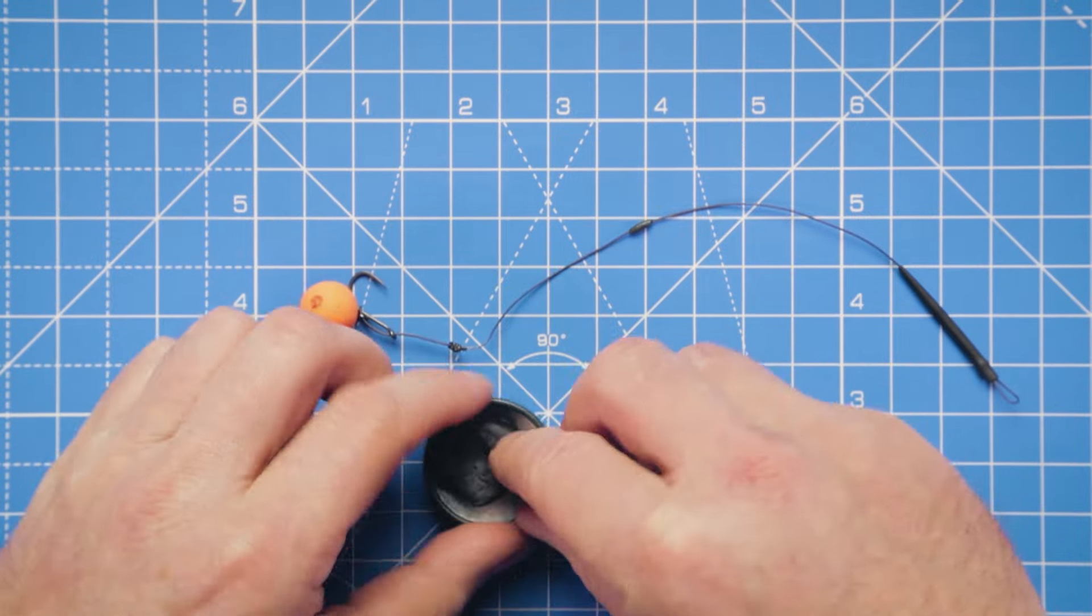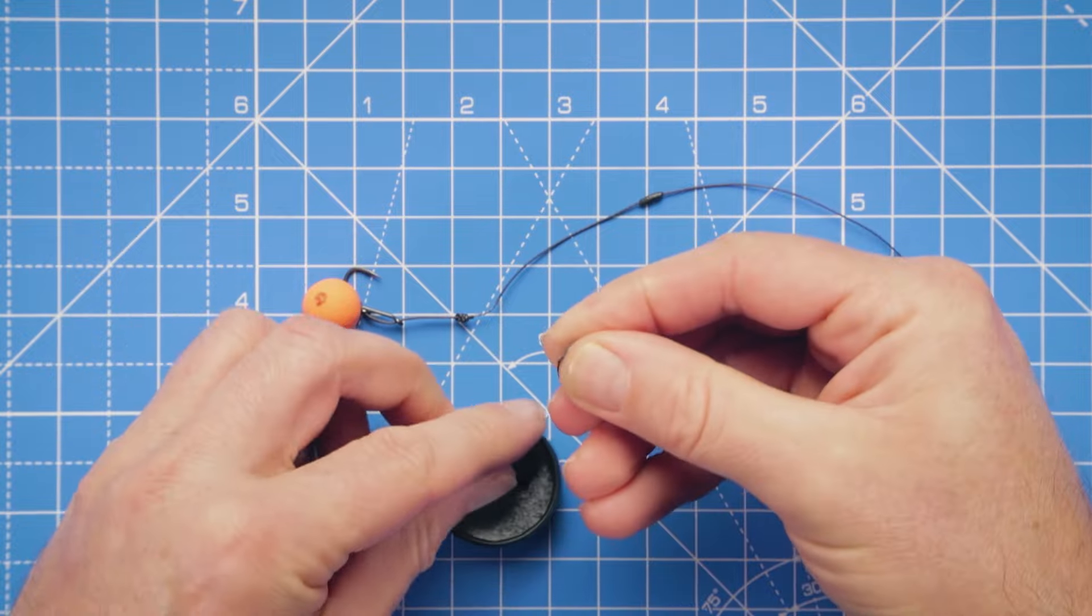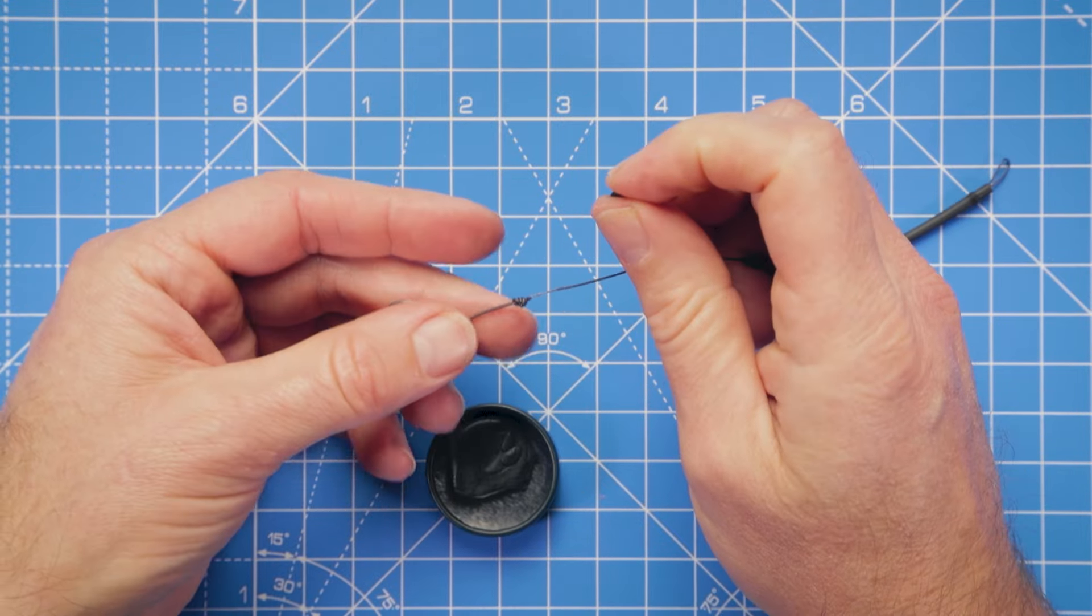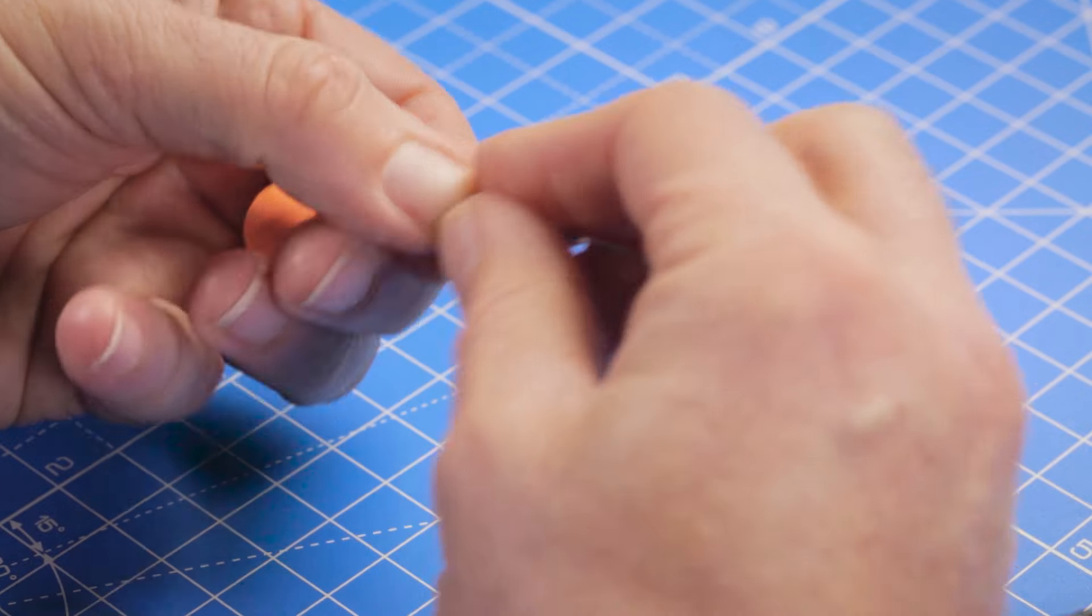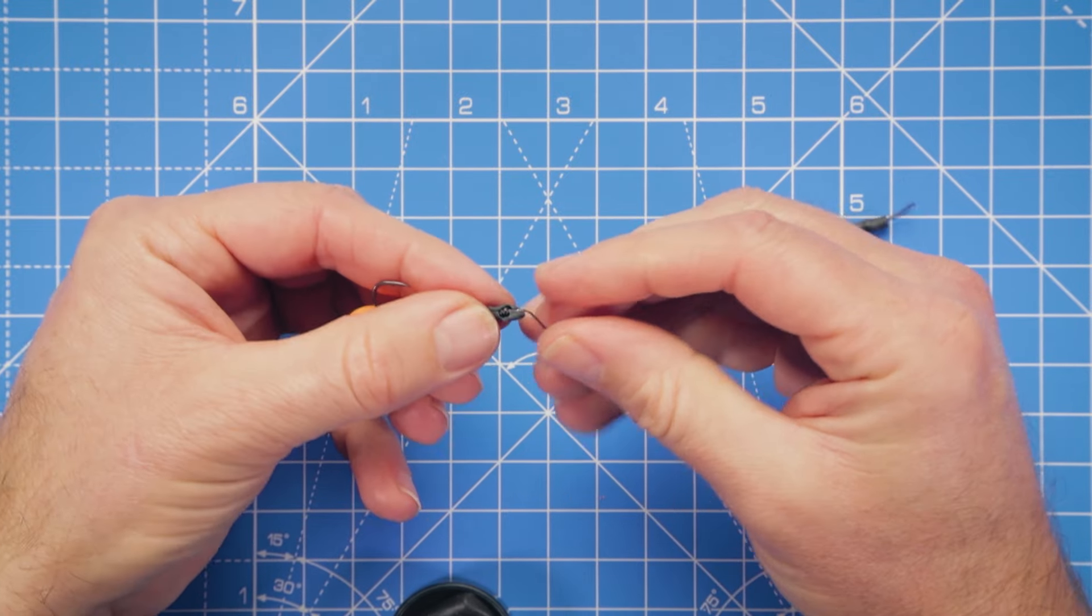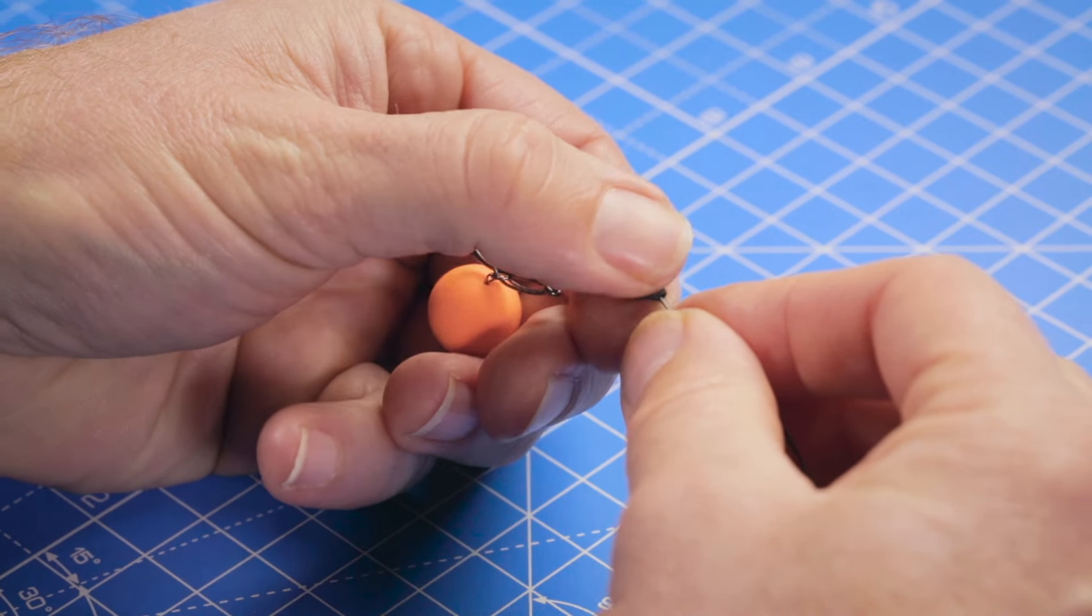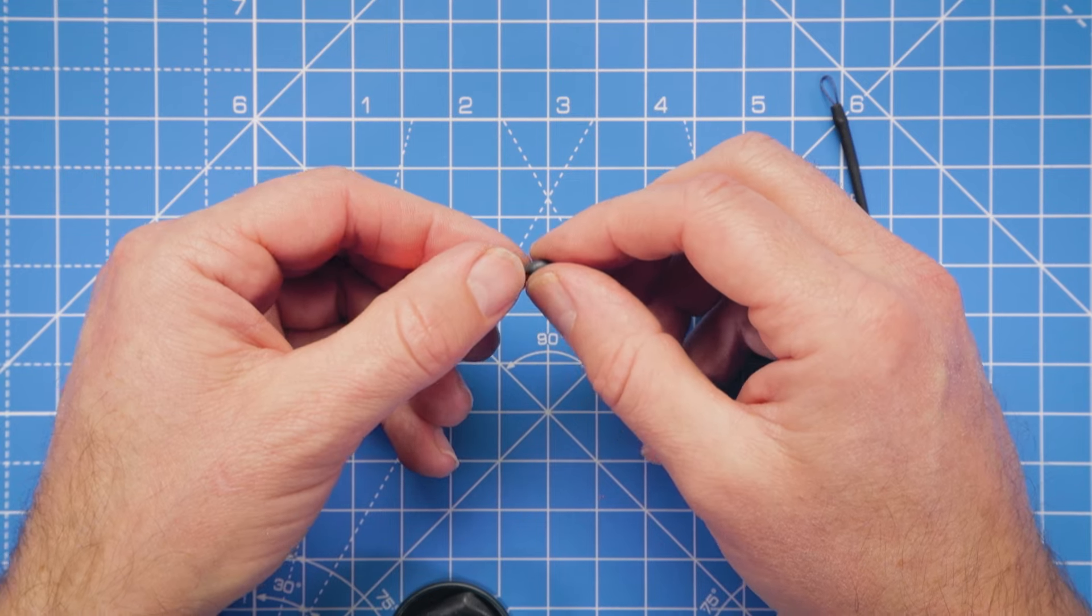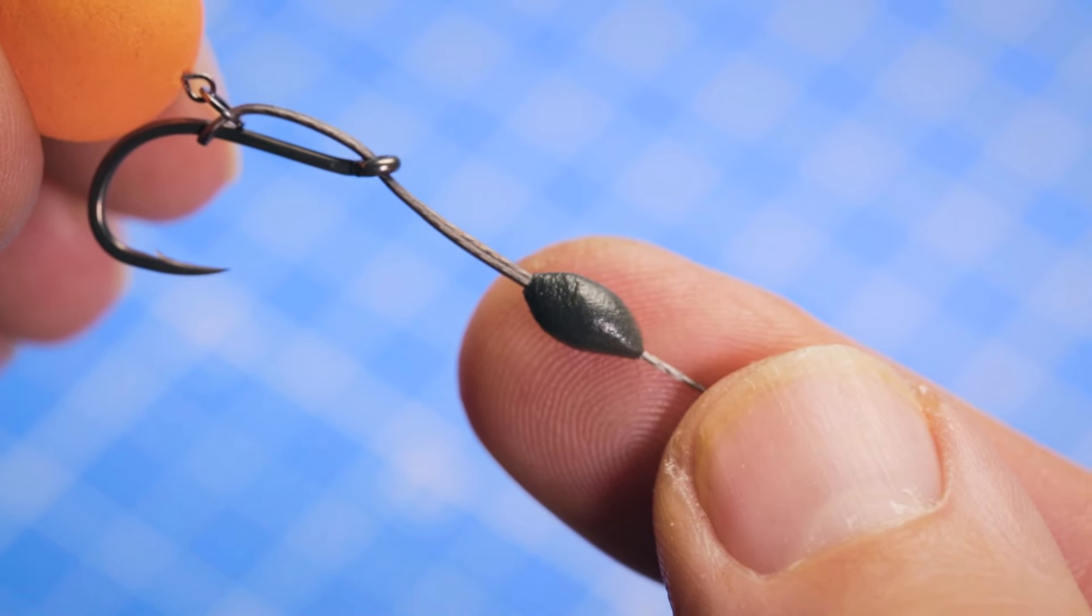And we can now take a larger pinch of that putty. It's weighted with tungsten, so it's going to be perfect for balancing out our pop-up. We're just going to mold that around that figure-of-eight loop knot that we tied earlier. Just push it into the knot, and then just using your finger and thumb, just roll it gently until it's molded into a nice neat barrel. And there we go, that's perfect for holding our hook bait down to the lake bed.